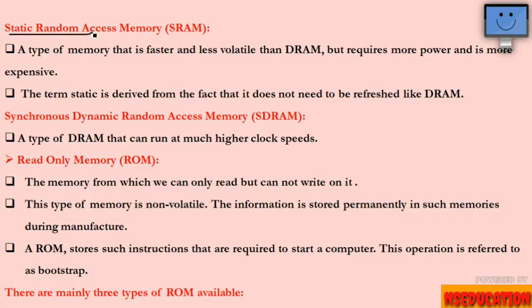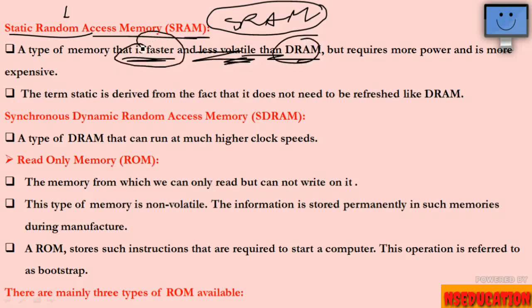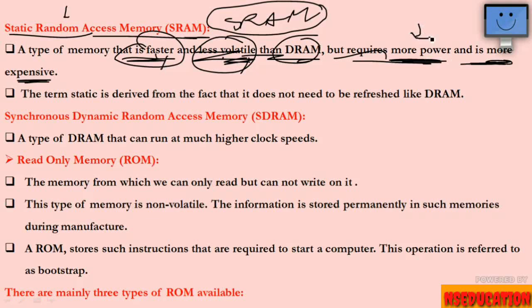Next is SRAM — Static Random Access Memory. SRAM is faster than DRAM and less volatile. However, its drawbacks are that it requires more power supply and is more expensive. So SRAM has two advantages: faster and less volatile; and two disadvantages: needs more power and costs more.